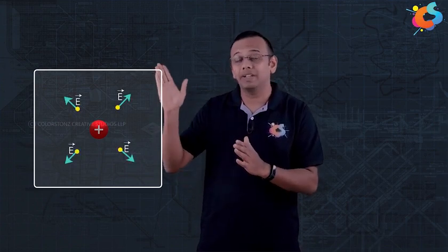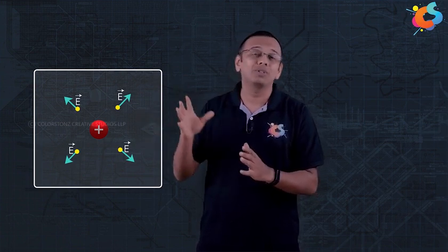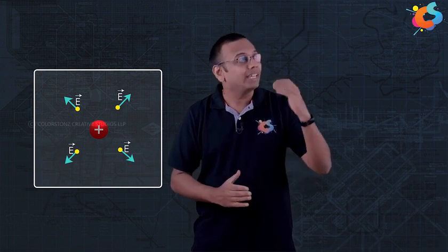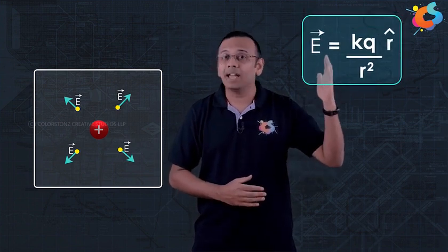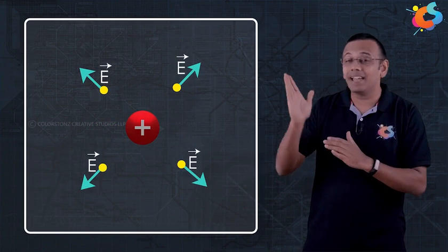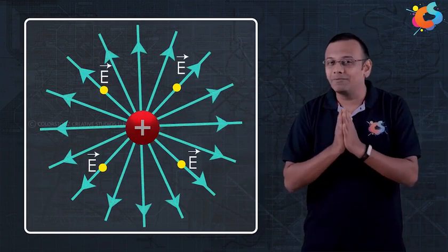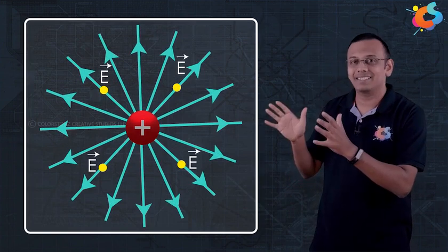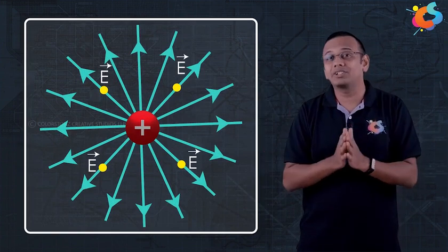Let us begin with a simple case of a single positive charge. We want to draw electric field lines in such a way that the field lines should move in the direction of the electric field at every point around this charge. We already know the electric field of a point charge is given by E vector = KQ/R² R-cap, which means the field is in the radial direction at every point. Therefore, the field lines of this charge should be moving in the radial direction everywhere.